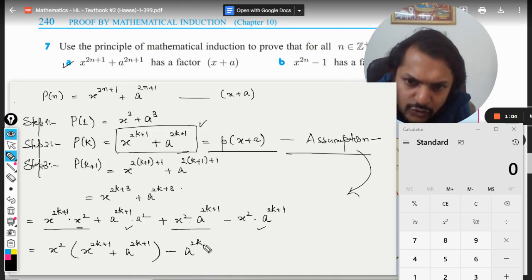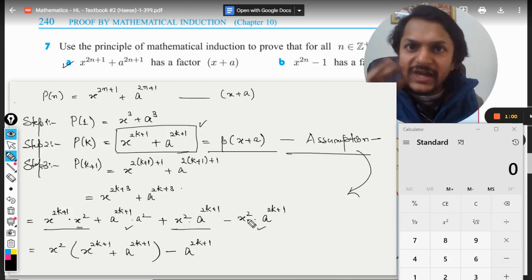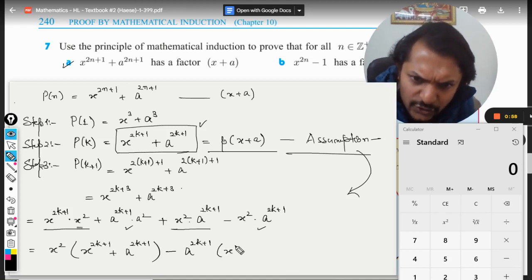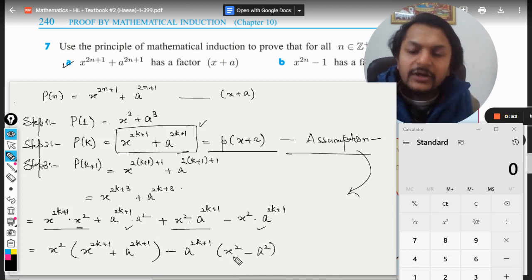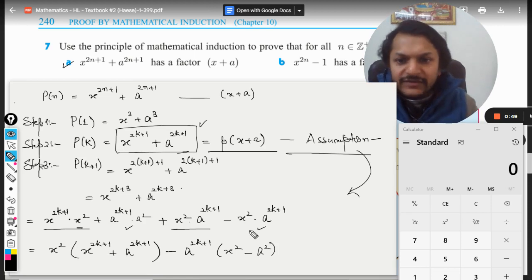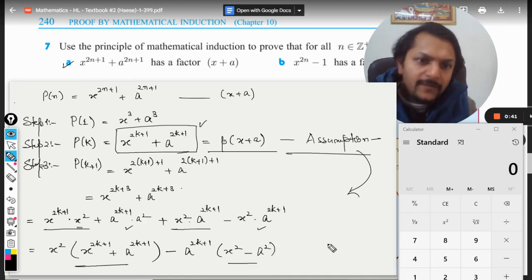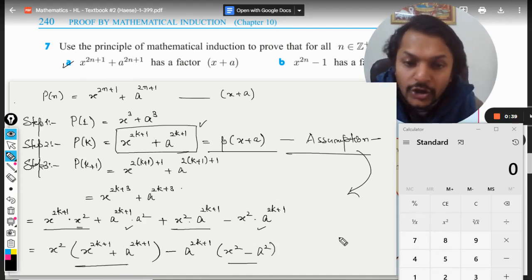We have to write this term and this term now. We can take minus a raised to power 2k+1 as common. Why I'm taking minus? Because I want to take x² as positive. From this term x² is there, and from this term it will be negative of a². This is a factor of this, and this is definitely a factor of this.